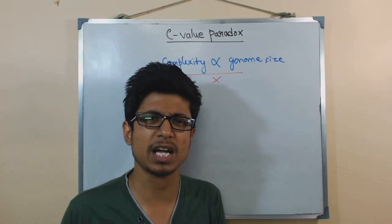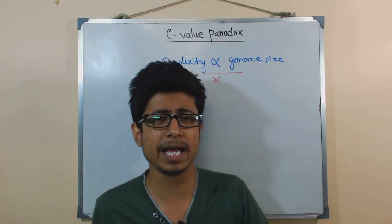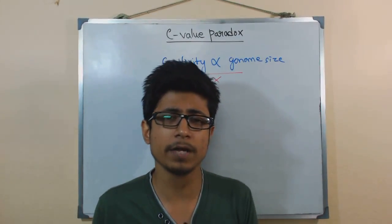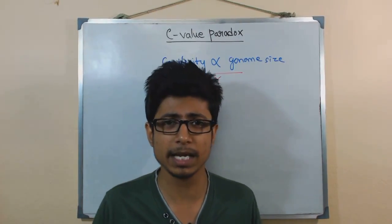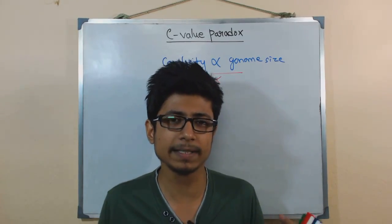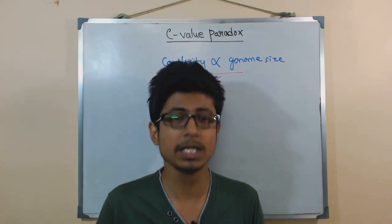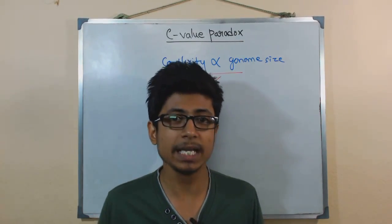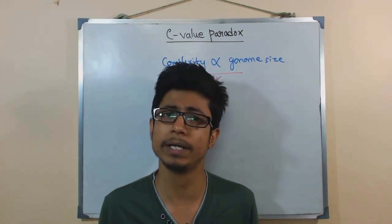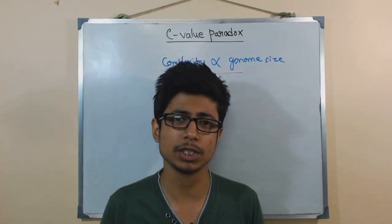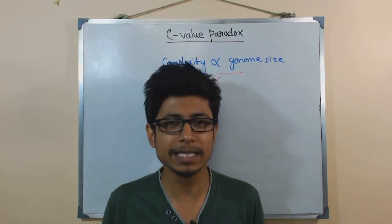Comparing a plant to a frog, or a frog to a human being, or a salamander to a human being — we might think that humans, being much more complex, should have more haploid genome content and more genes. But the answer is no. Salamanders have even more genomic content than us, yet they are not as evolved or complex. So genome content and organismal complexity are simply not relatable.